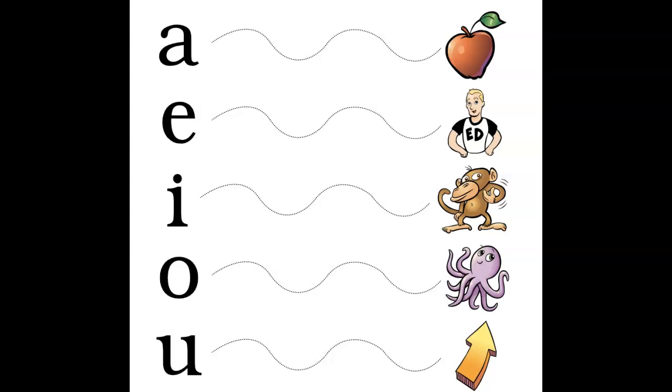One of the resources that we use to practice our vowel sounds is the poster you're looking at on your screen. This is a Foundations resource and it's called a vowel extension poster. When we use this poster, we are practicing our short vowel sounds.